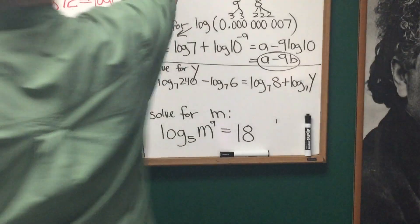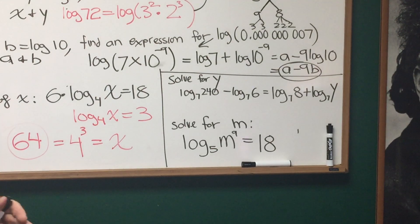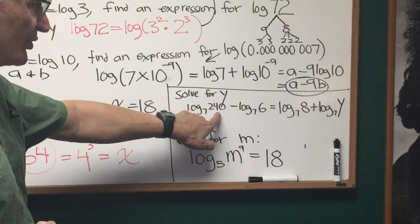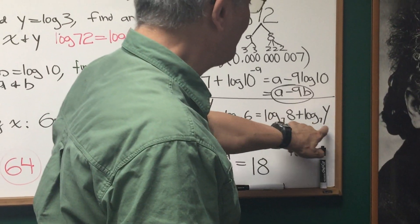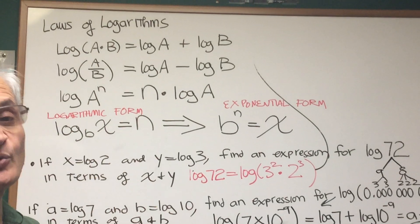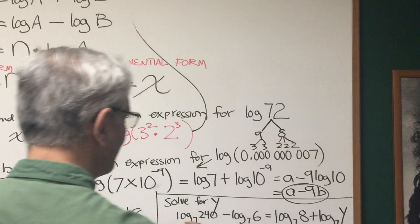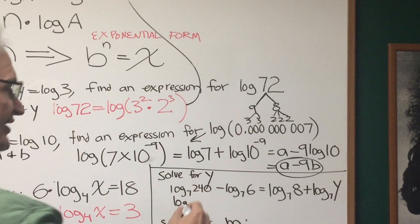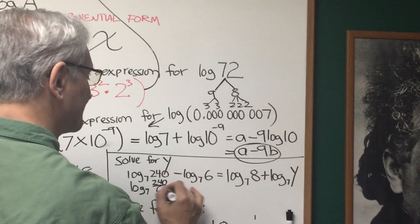Two more log problems here. Let's create a little space here, and we're going to be using the same laws of logarithms that we've been using all along. Look at this one. Solve for y: Log base 7 of 240 minus log base 7 of 6 equals log base 7 of 8 plus log base 7 of y. Now we're going to use this first and second laws in the reverse direction. The difference of two logs is the log of that quotient. So this first expression, log base 7 of 240 minus log base 7 of 6 is going to be log base 7 of 240 divided by 6.